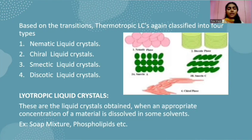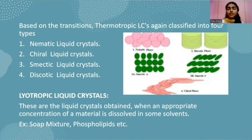The second classification under liquid crystals is lyotropic liquid crystals. These are the liquid crystals obtained when an appropriate concentration of a material is dissolved in some solvents. For example, soap mixtures and phospholipids, etc.